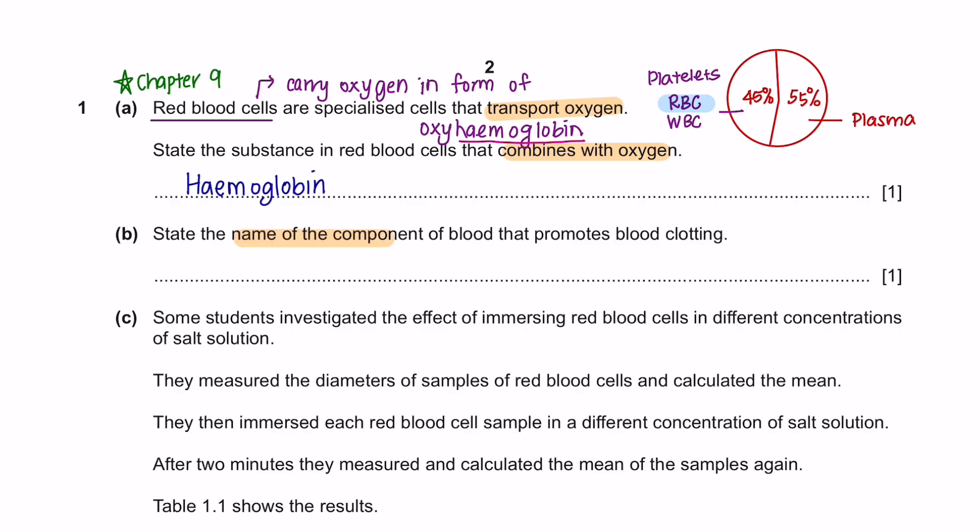Part B, state the name of the component of blood that promotes blood clotting. Make sure you know all the components of the blood and its function. Platelets are involved in helping the blood to clot. So the answer here is platelets.